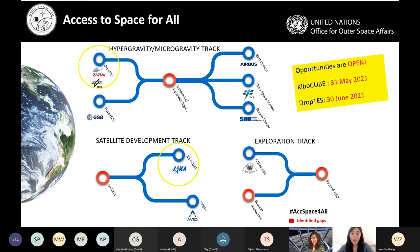Our Access to Space for All Initiative has eight opportunities, two currently open for applications. The first is Kibo Cube under the Satellite Development Track, in partnership with the Japanese Aerospace Exploration Agency JAXA — an opportunity to deploy a 1U CubeSat from the ISS Experiment Module Kibo, open until the 31st of May. The second is DROP Test, under the hypergravity/microgravity track, in collaboration with ZARM and DLR, where you can conduct microgravity experiments using the Bremen Drop Tower, open until the end of June.